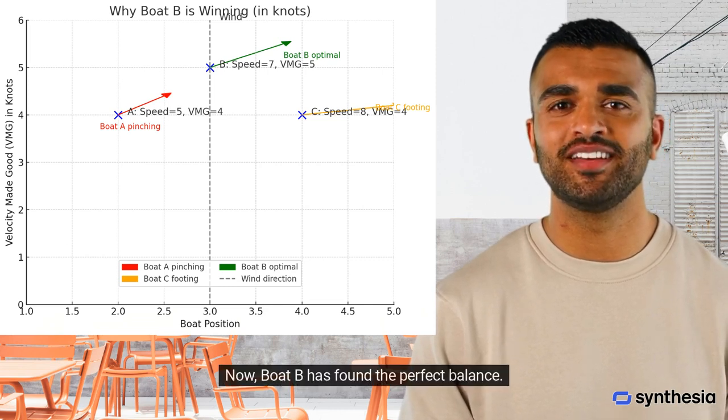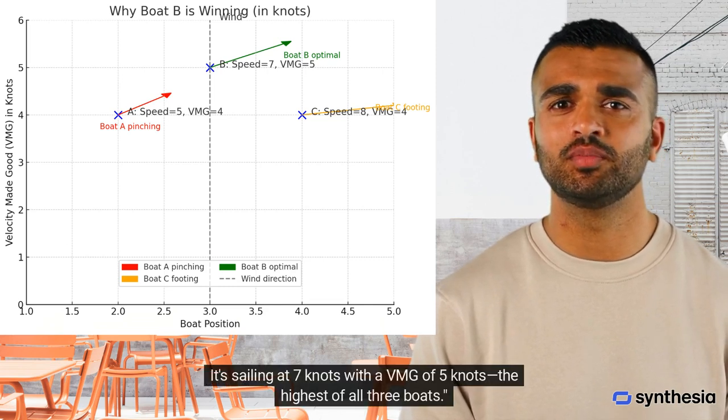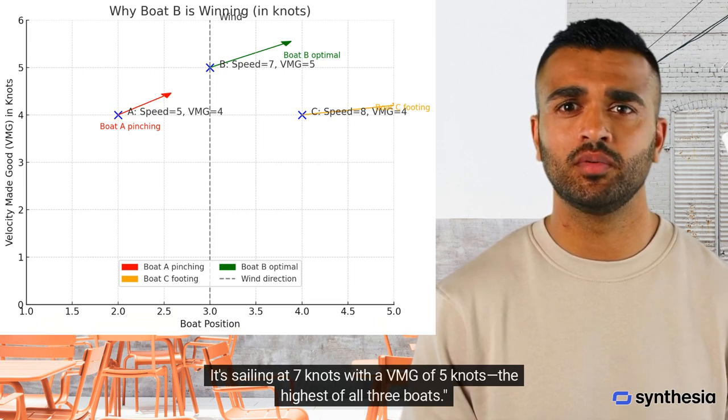Now, Boat B has found the perfect balance. It's sailing at 7 knots with a VMG of 5 knots, the highest of all three boats.